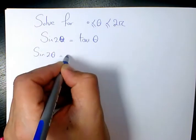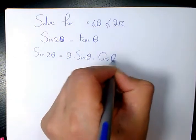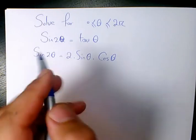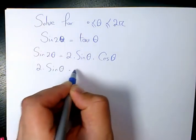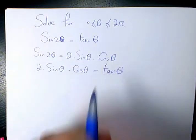we know that's going to be equal to 2sin(θ)cos(θ). So sin(2θ) equals 2sin(θ)cos(θ). So it's going to be 2sin(θ)cos(θ) = tan(θ).